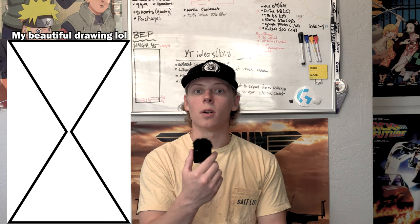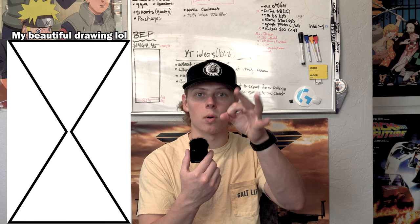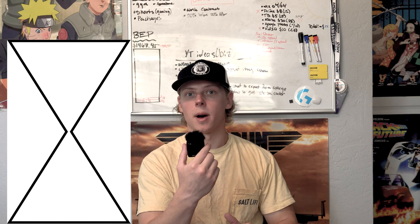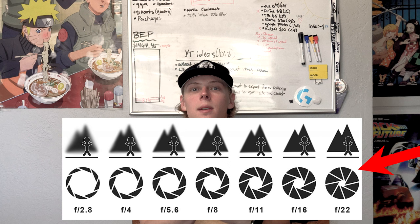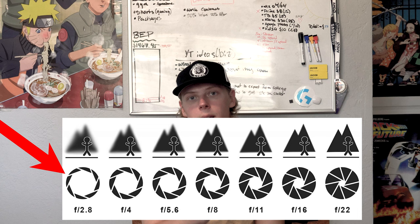I use something very simple to understand what aperture is: imagine an hourglass. They measure time by using how much sand is in there and how constricting the center point is for the sand to flow from top to bottom. The wider that gap is, the faster the sand falls. Aperture can be thought of very similarly — that little constriction in the middle of the hourglass, think of that as your aperture. The smaller the aperture, the less light can get into your camera. The wider that nozzle, the more light that can come into the lens.